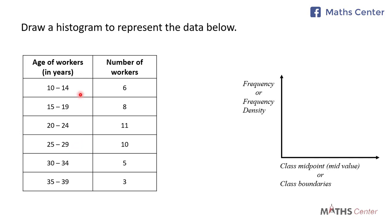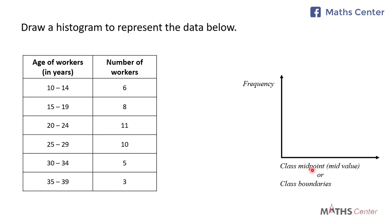Since the class sizes or class widths are the same, on the vertical axis we are going to have the frequencies, which is given to us in the table as the number of workers. Now for the horizontal axis, as we learnt in the previous video, you may either have the class midpoints or midvalues, or the class boundaries.